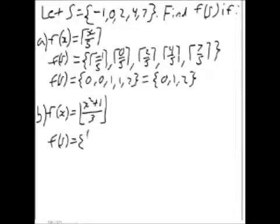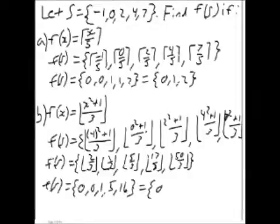If f of x is the floor of x squared plus 1 over 3, we do the same thing — take the individual outcomes of each term in the set. Now we simplify, and we get the set 0, 0, 1, 5, 16. If you want to write it in simplest form, it's the set 0, 1, 5, 16.